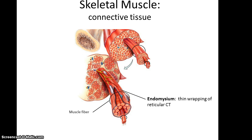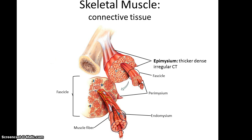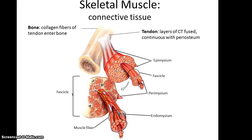Also within the skeletal muscle is lots of connective tissue. Around each muscle fiber is a thin wrapping of reticular connective tissue called the endomysium. Then surrounding each fascicle is another layer of dense irregular connective tissue called the perimysium. And around the muscle organ as a whole is another layer of dense irregular connective tissue called the epimysium. These three layers — the endomysium, perimysium, and epimysium — all fuse together to form the tendons at either end of the muscle organ.